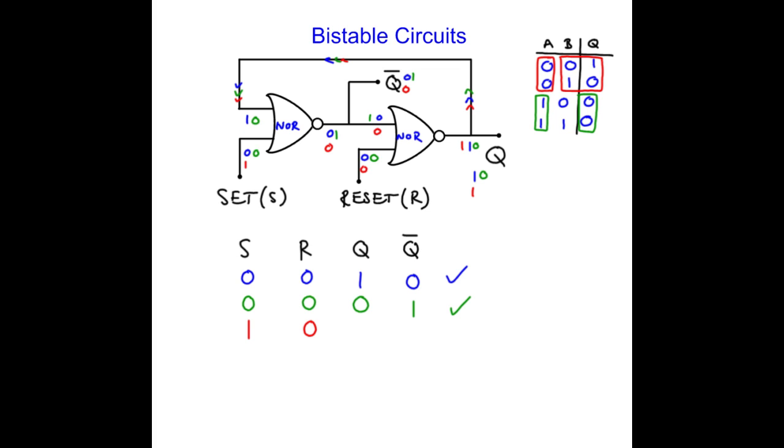It was 0, but now it's 1. 1 and 1 still give me 0 out for q bar. So q becomes 1 and q bar becomes 0. So making the set 1 forces q to become 1. That's the only option. There's no other choice.